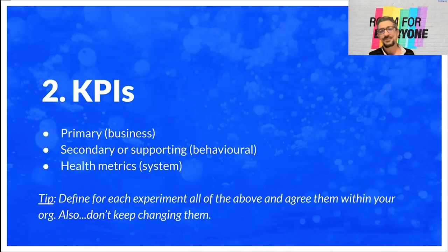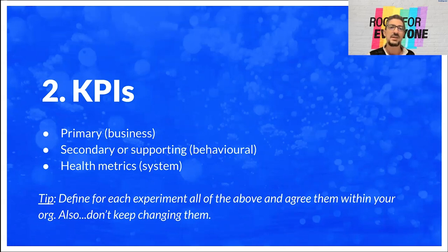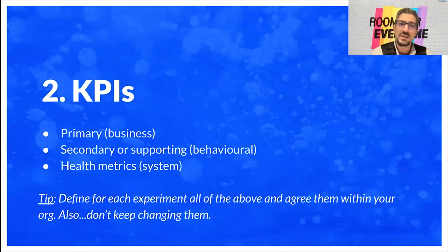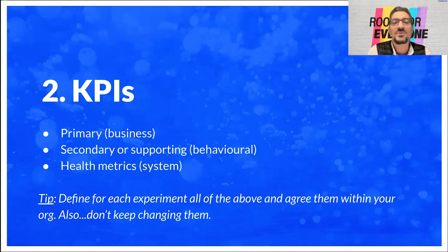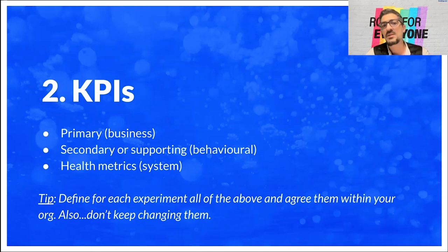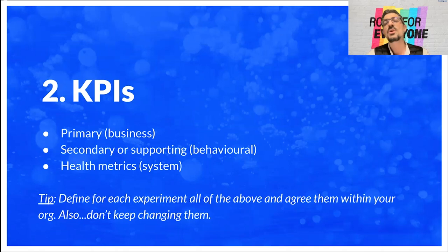Second building block is KPIs. You can categorize KPIs in three buckets. Primary is the one that will help you make a decision. Secondary is supporting — usually behavioral KPIs about how users interact with your product. And last, health metrics — usually metrics related to the system. The first tip here is that it's important to define all of the above for every experiment you run: primary, secondary, and health metrics. Try to agree on and maintain consistency within your organization — do not keep changing your KPIs every time unless strictly necessary.